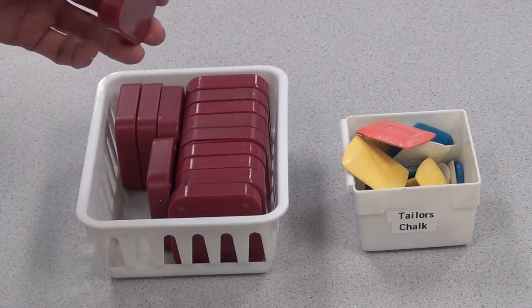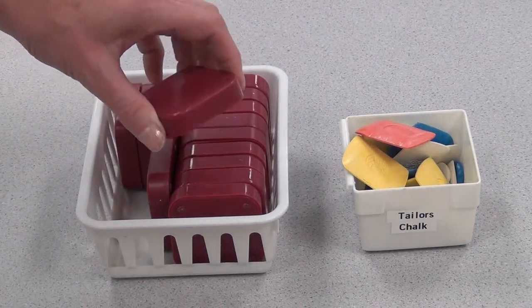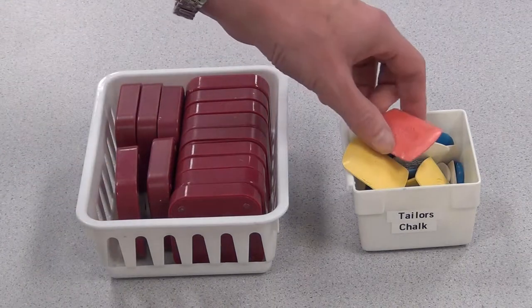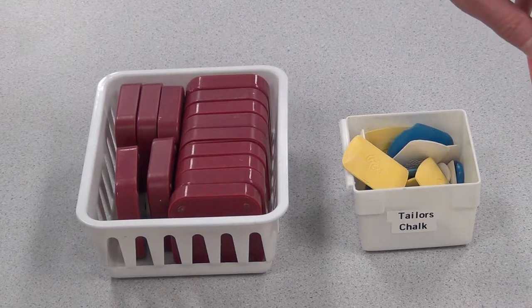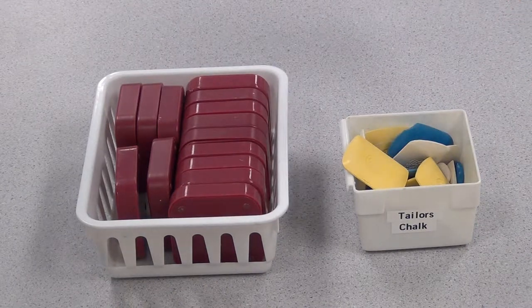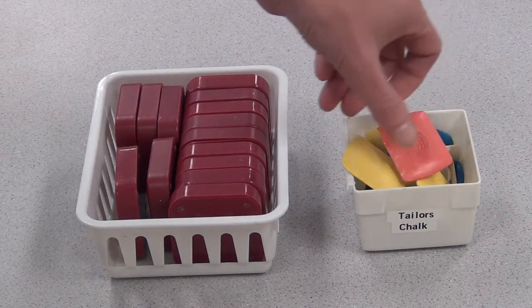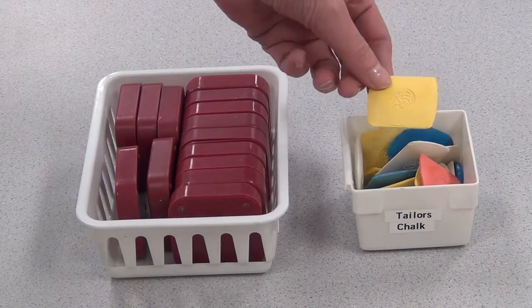We use weights to hold down patterns. Use as many as you need. We use tailoring chalk when we're tracing patterns. So you'll draw along the outside of the pattern onto the wrong side of the fabric using whatever color shows up on your fabric.